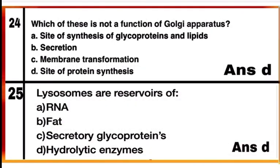Question 24: Which of these is not a function of the Golgi apparatus? Option D — site of protein synthesis — is not a function of the Golgi apparatus. Protein synthesis takes place in ribosomes. Other options A, B, and C are correct about the functions of the Golgi apparatus. Mark D as the correct answer.